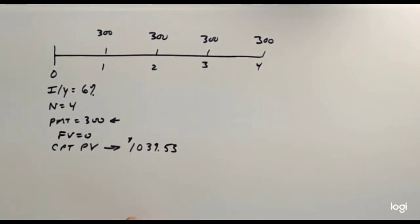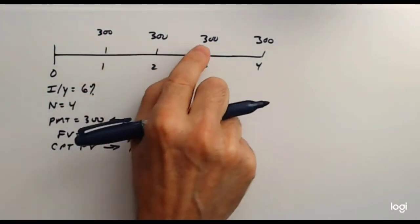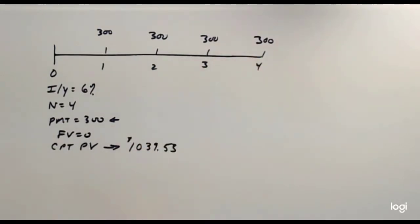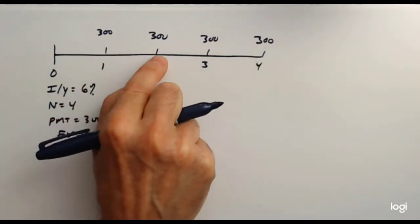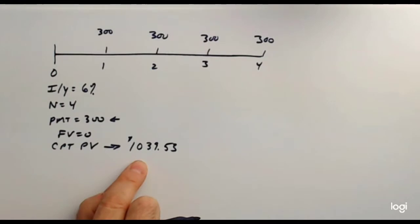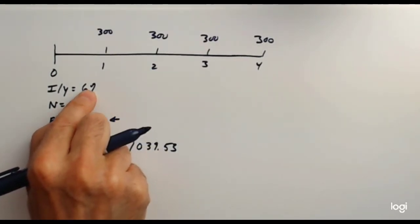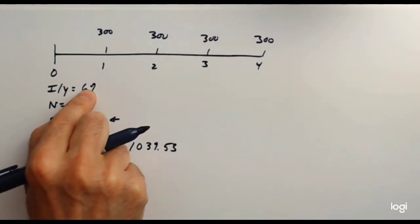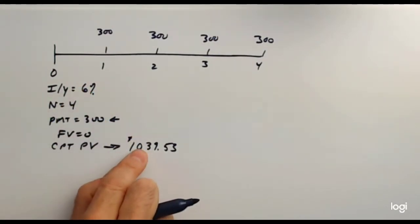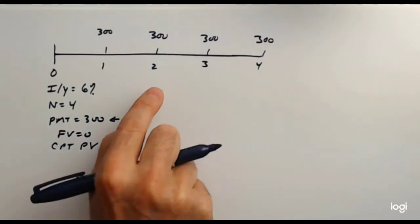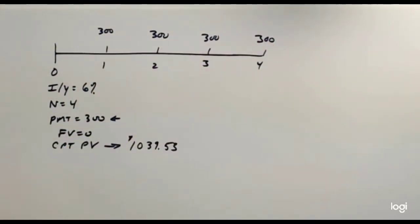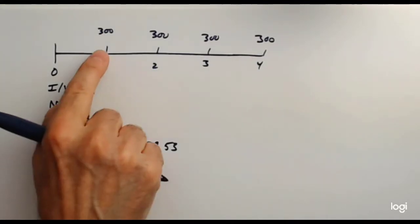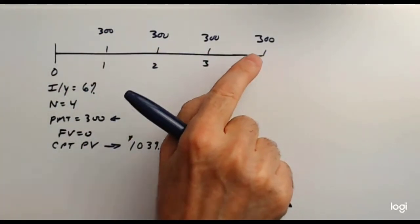How do you interpret that? If you wanted to buy an annuity where you get $300 back for each of four years, starting one year from now, you would pay $1,039.53, provided that interest rates are 6%. This is an investment — this is how much you'd pay for it. You'd pay almost $1,040 for this, and you'd be getting a total of $1,200 worth of cash flow.